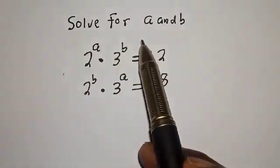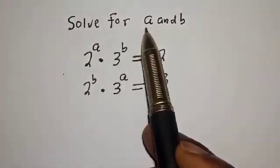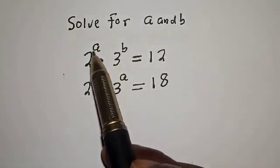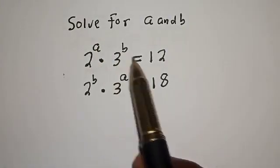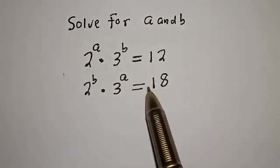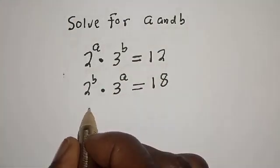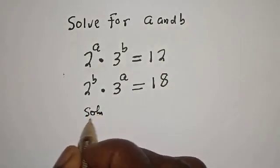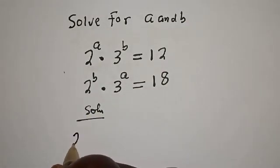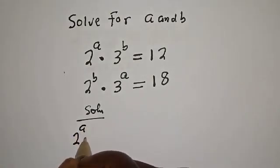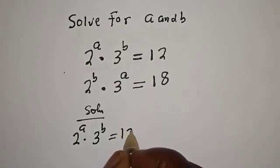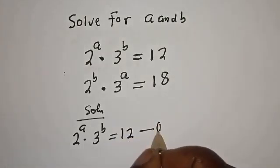Hello, welcome to Math Focus. How to solve for a and b from this given equation: 2 raised to power a, multiplied by 3 raised to power b, is equal to 12. This is equation 1.